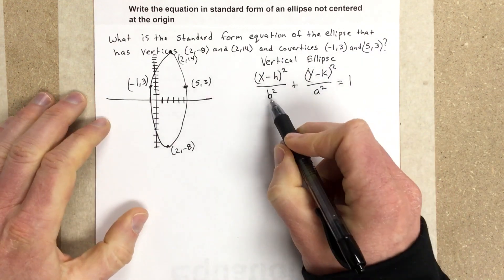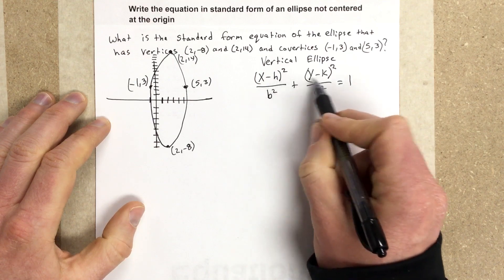Now we need to find b², a², and we need to find the center. I think we can find the center pretty easily here.